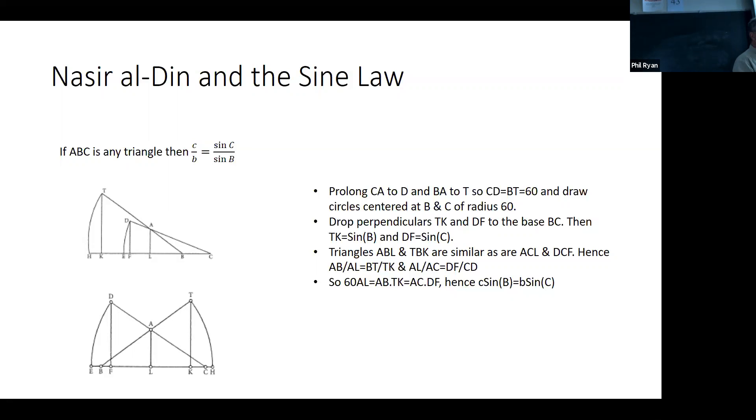Of course, it doesn't matter for the sine law because you're dealing with ratios. If you multiply sine by 60, it just cancels out. Since it's the law of ratios, it doesn't really matter what you use as a reference circle. So you prolong the sides that you're interested in, draw a circle, and then drop a perpendicular to the base. That means you've constructed lengths of side sine, whatever you're interested in, because sine is a length for them. We've got a circle of radius 60, so this length here is the actual definition of what sine is.